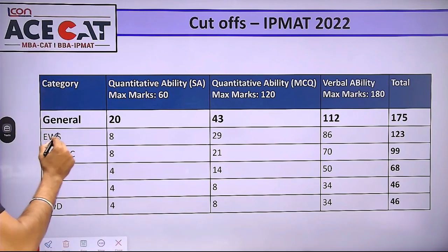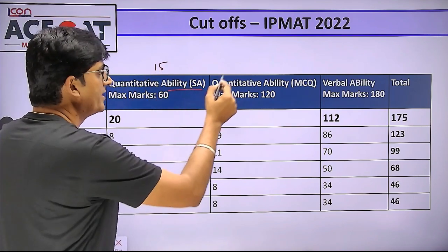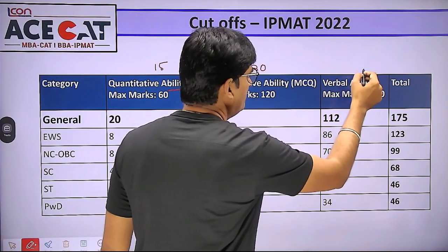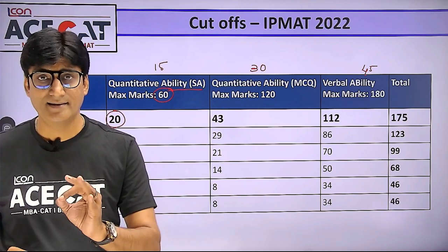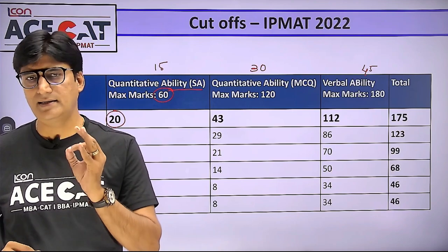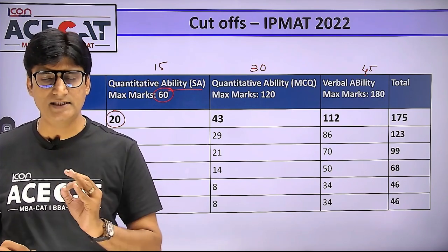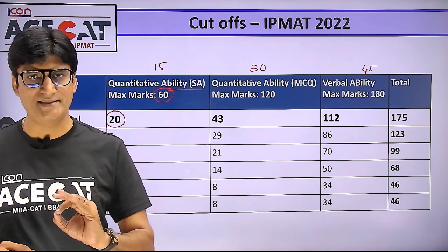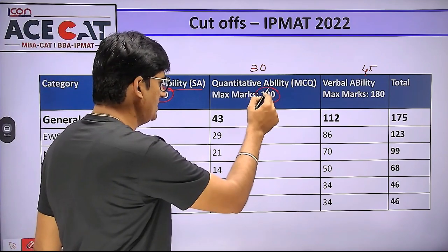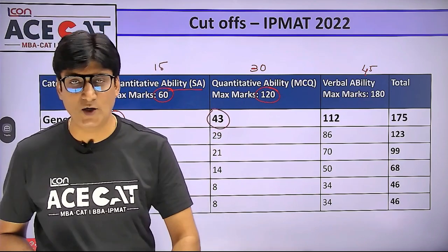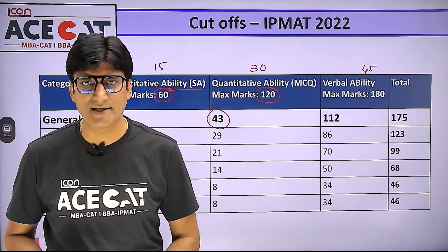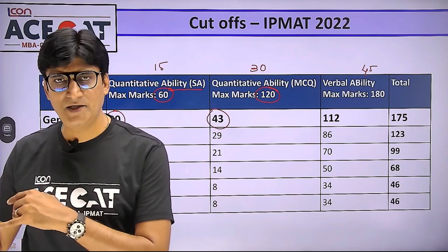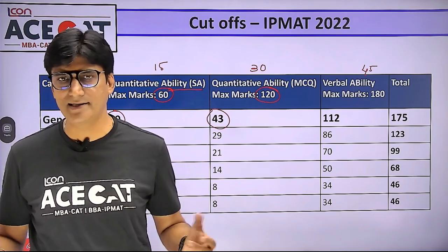For the General category: 15 short answer questions — the cutoff was 20 out of 60. In 40 minutes, if you attempt 6-9 questions and 5-6 are correct, you clear the short answer cutoff. For Maths MCQs, total 120 marks, the cutoff was 43. Out of 30 questions, if you solve 14-17 and even 3-4 are wrong, you can still clear the cutoff of this section.